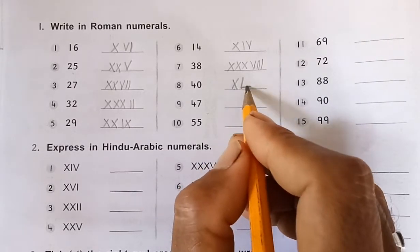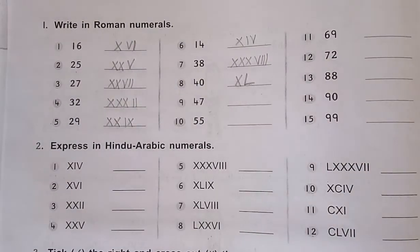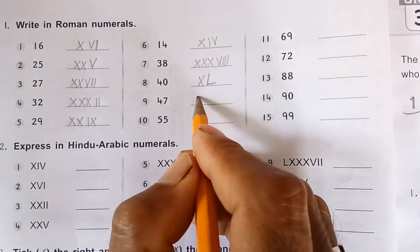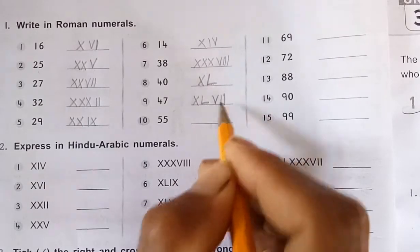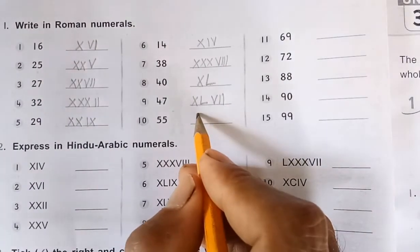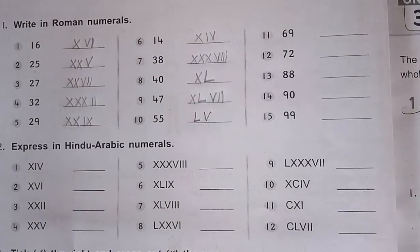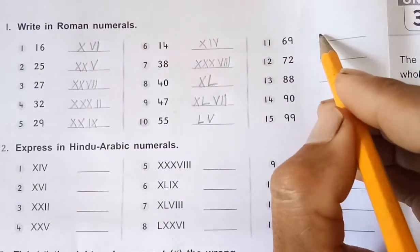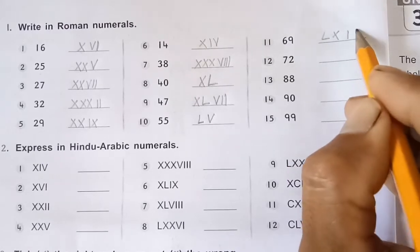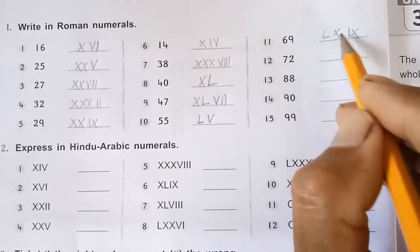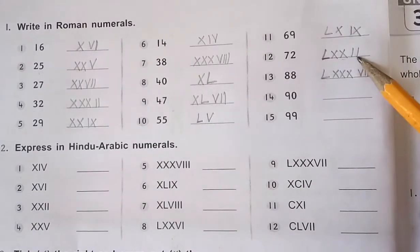Whenever the smaller symbol is on the left side, it is the subtraction principle. So 50 minus 10 equals 40. For 47, it is XL plus VII, giving XLVII. For 55, it is L plus V, giving LV. Similarly, for 69, it is 50 plus 10 that is 60, and then IX means 9, giving LXIX.